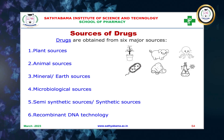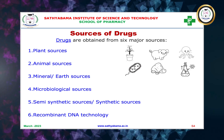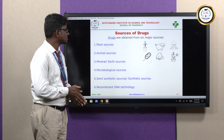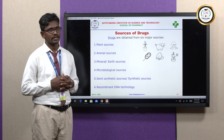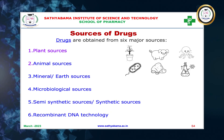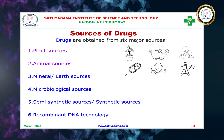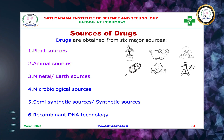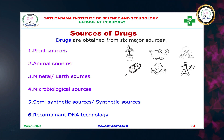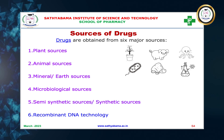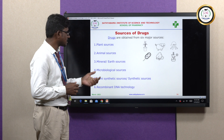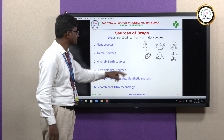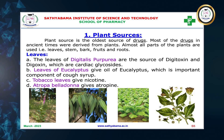Next, where do we get the drug substances from? We have six major sources: one is from the plant source, animal source, mineral or earth sources, microbiological sources, semi-synthetic or synthetic sources, and recombinant DNA technology — with this technology also we prepare dosage forms. Let us see them one by one.